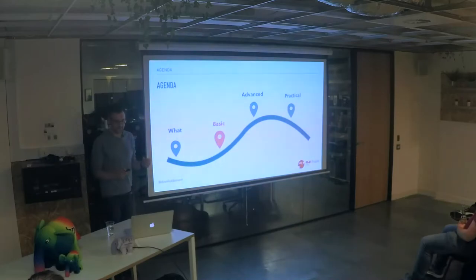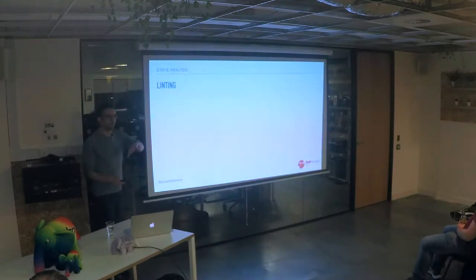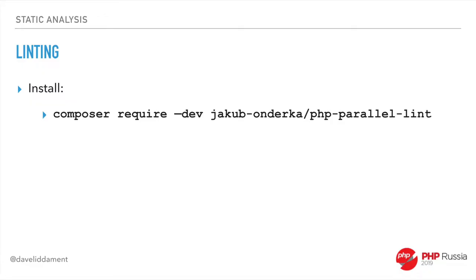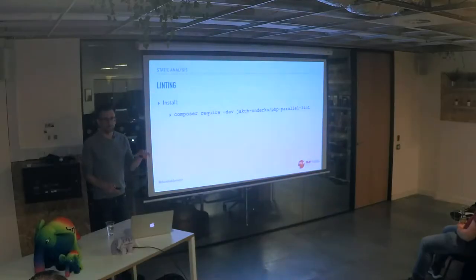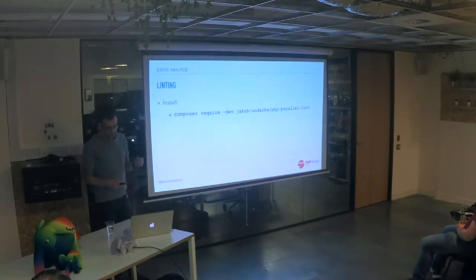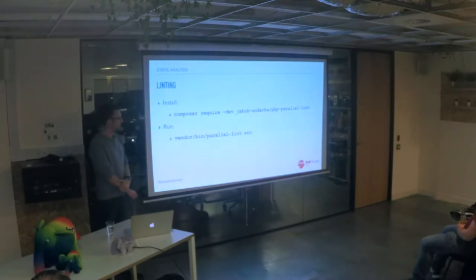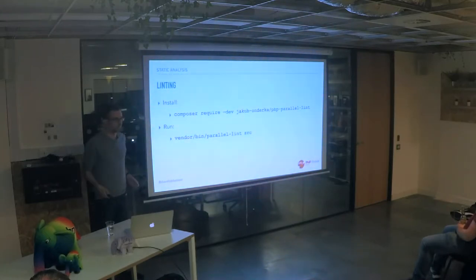Let's look at some basic static analysis tools. The simplest type are linting tools — looking at your code and checking it can even be compiled or interpreted. For example, if you're missing a semicolon or a closing brace, a linter would find that. The linting tool I use is ParallelLint. If you want to add this to your project, you just require it and then run it, calling ParallelLint and giving it the directories where your code lives. In reality, if you're using PHPStorm, this should very rarely find anything since PHPStorm will probably tell you you've made a mistake.